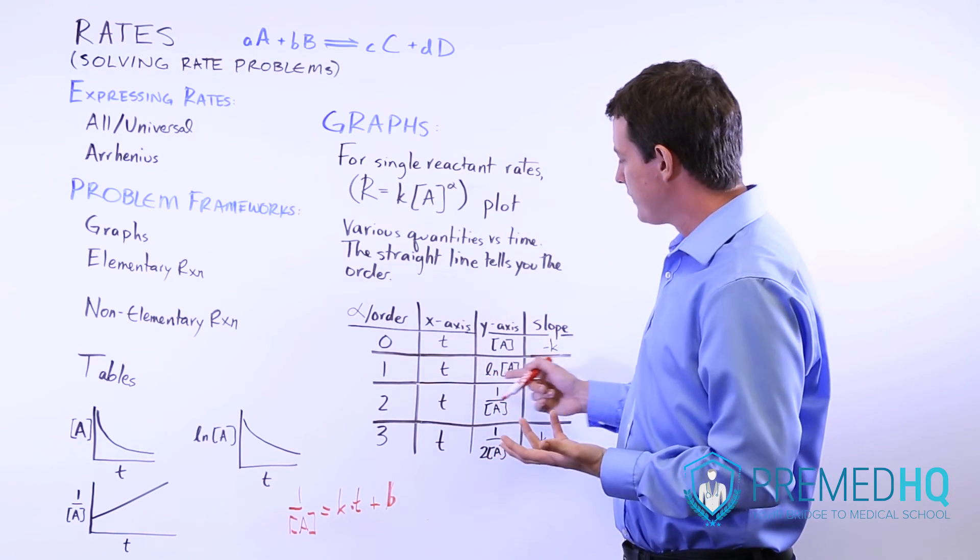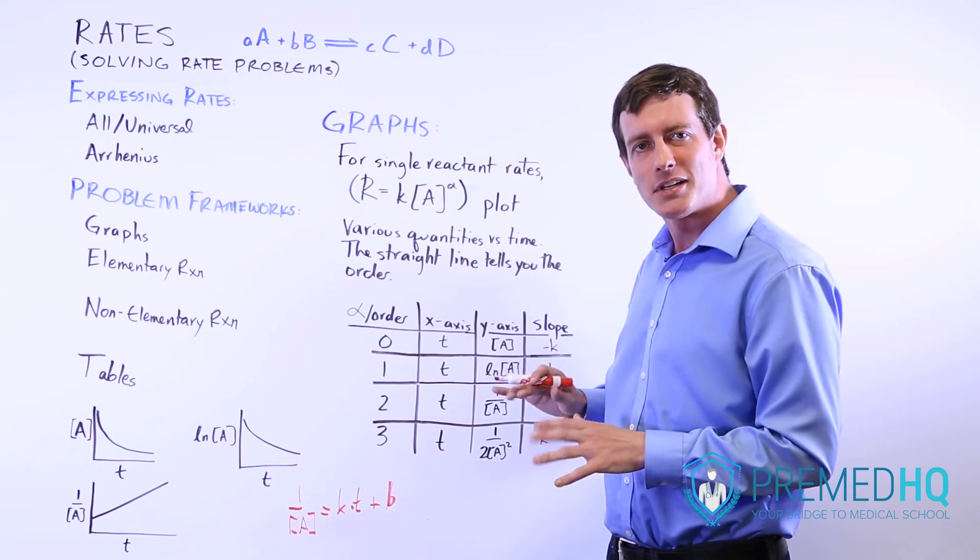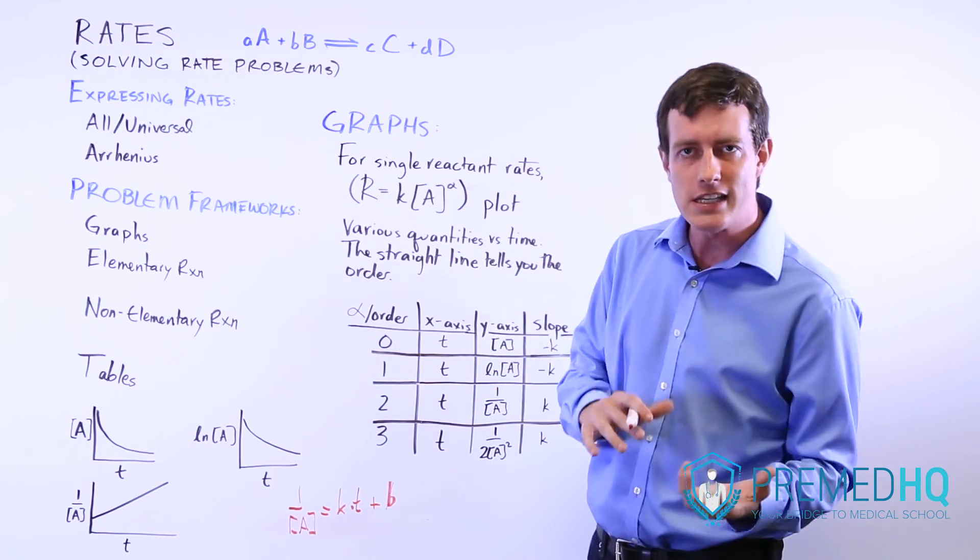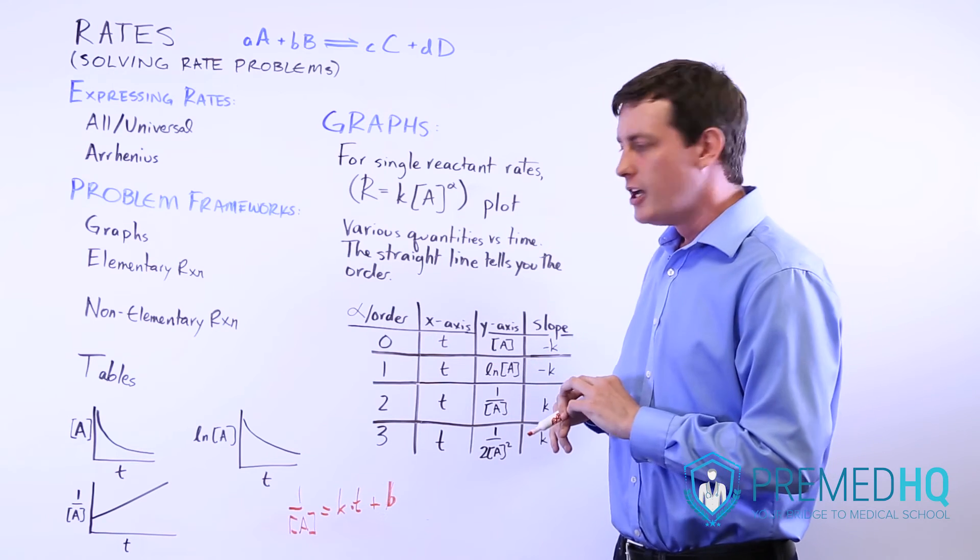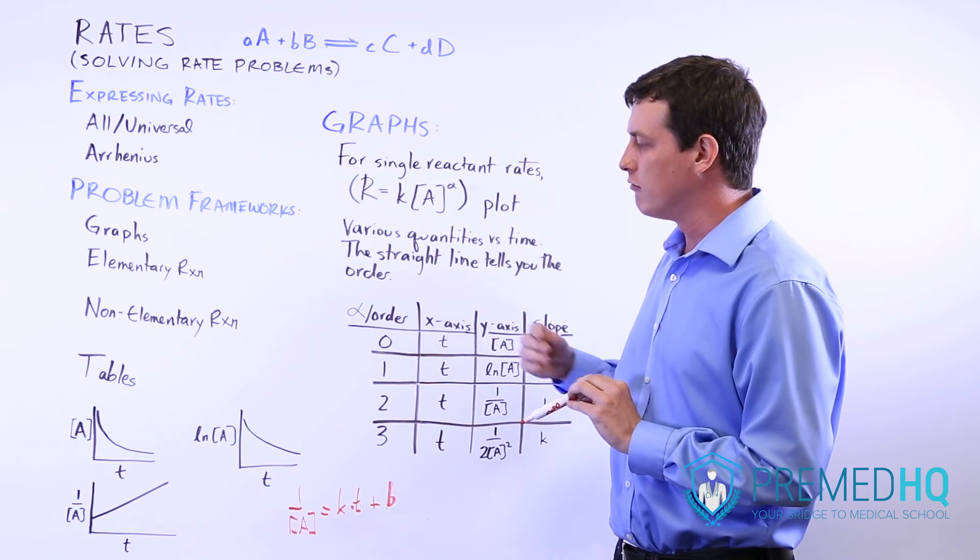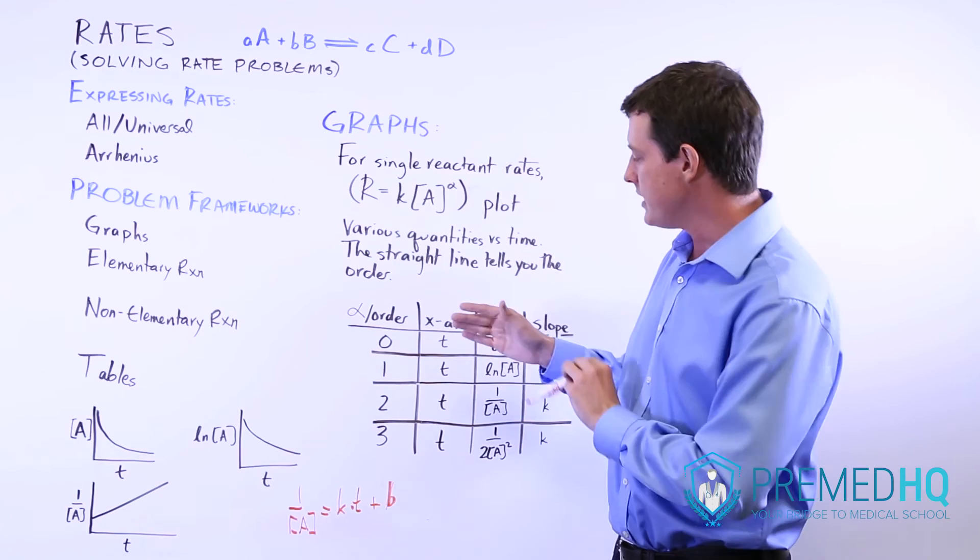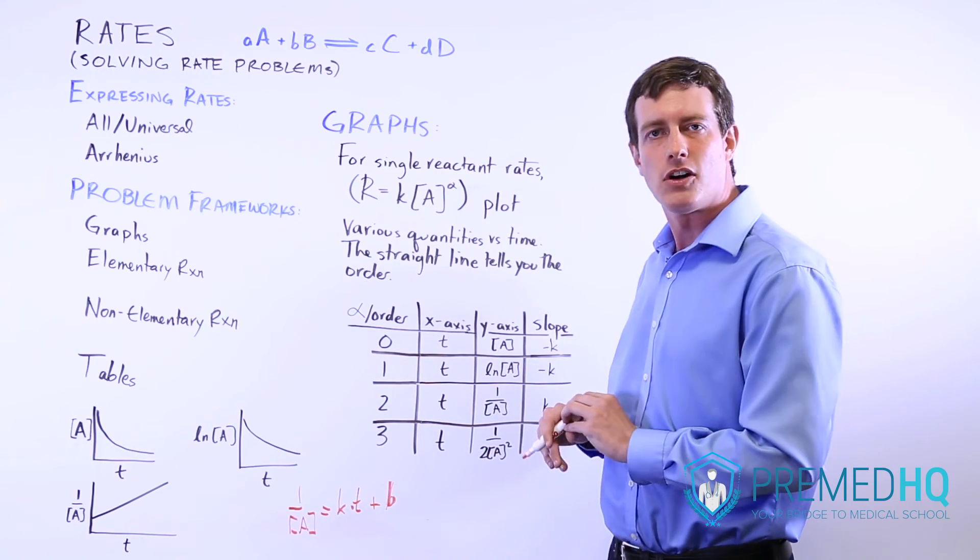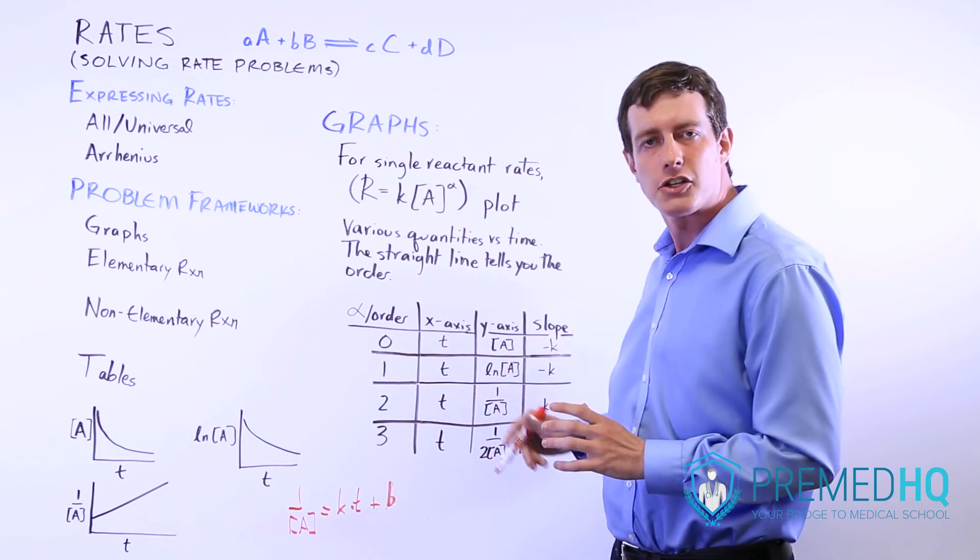If you have something like an ln of A, it can be a bit more complicated, because then you might have to raise e to some power or something like that. But if you're looking at a rate equation, and e is involved, or an ln is involved, you will know that that is a first order reaction, because that's the only one that involves the natural log.